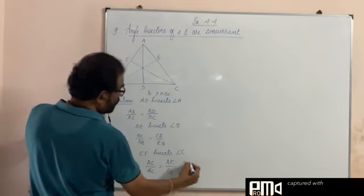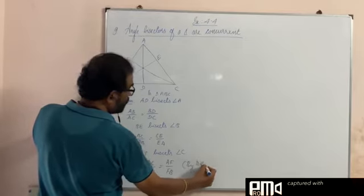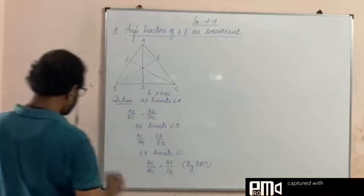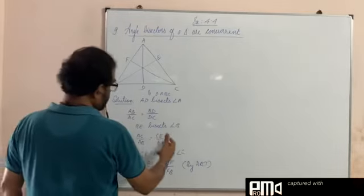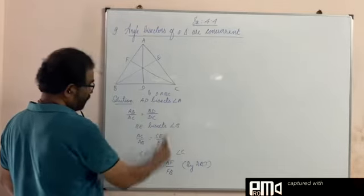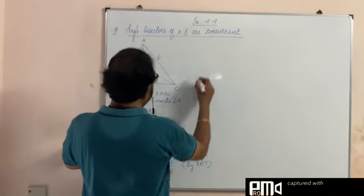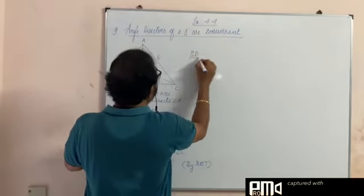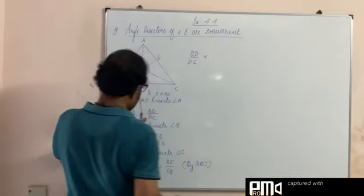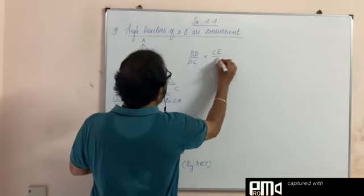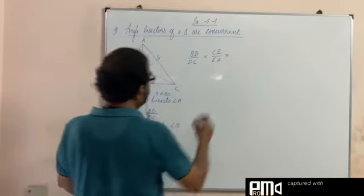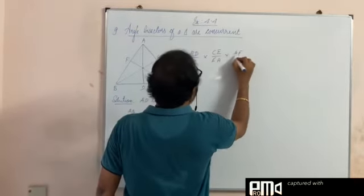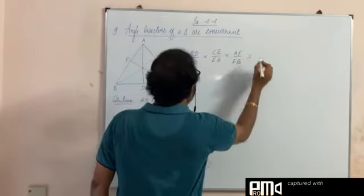All these are right. Now I multiply all the right hand sides. BD by DC into CE by EA into AF by FB is equal to...